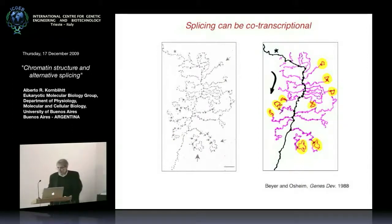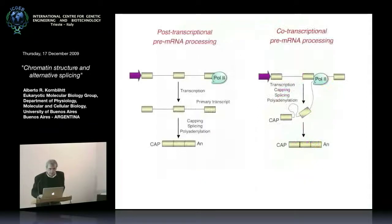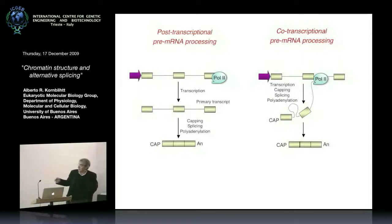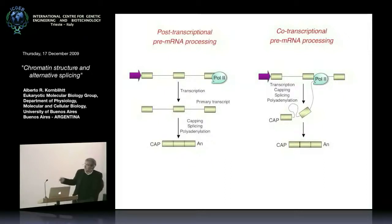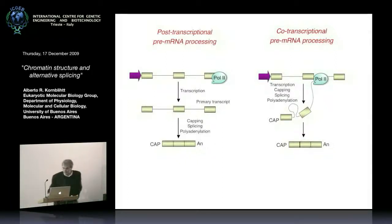So splicing can take place before Pol2 reaches the end of the gene. The old picture of gene → primary transcript → then capping, splicing, and polyadenylation must be replaced by a more dynamic situation in which all pre-mRNA processing events — capping, splicing, cleavage, and polyadenylation — can occur co-transcriptionally.